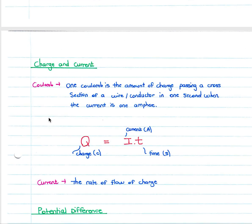One coulomb is the amount of charge passing a cross-section of a wire or conductor in one second when the current is one ampere. Current is the rate of flow of charge.